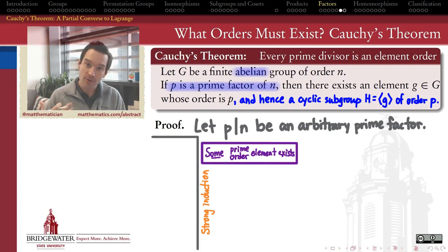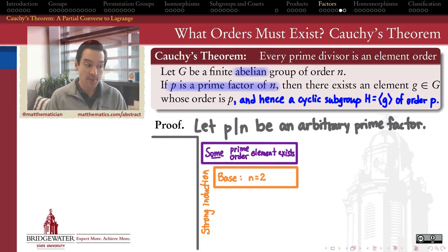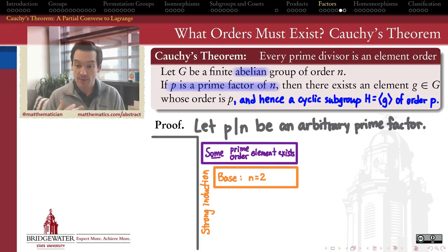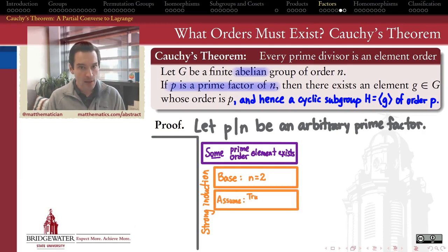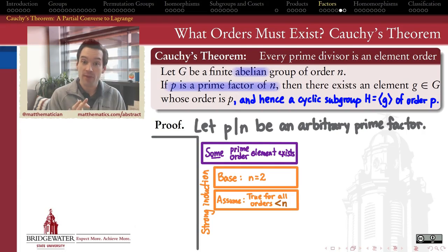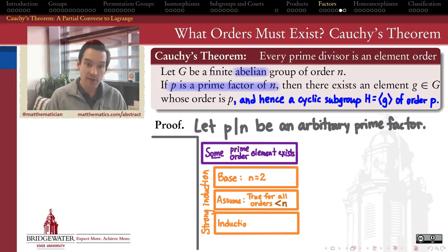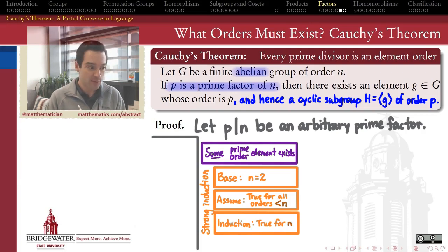To accomplish that, I'm going to use a strong mathematical induction argument. I'll induct on the order N of the group and the prime P chosen as divisor. The base case will be when the group has order 2. Then I'll make a strong induction hypothesis, assuming this theorem is true for all groups whose order is less than N, and in the inductive step deduce that the statement is true for groups of order N. That's the roadmap for the proof.